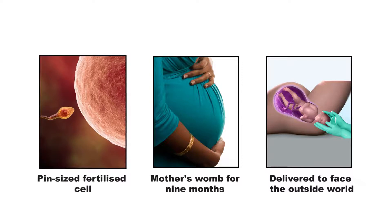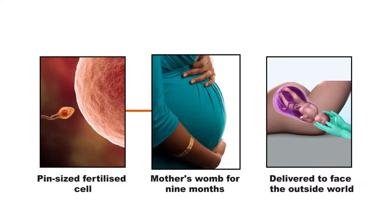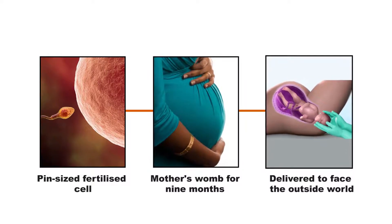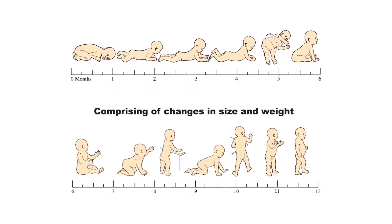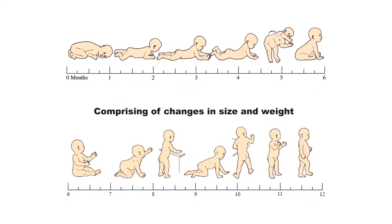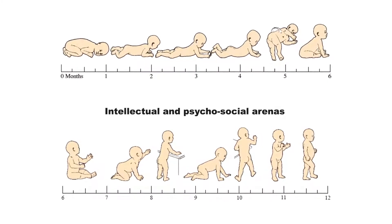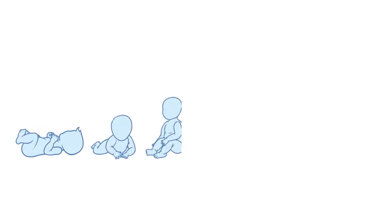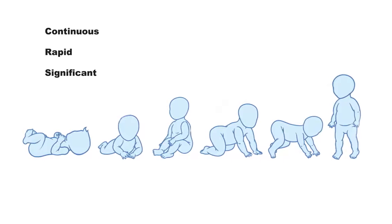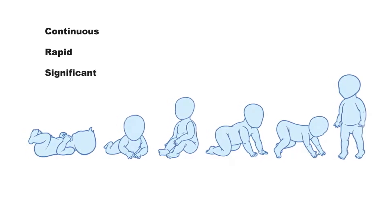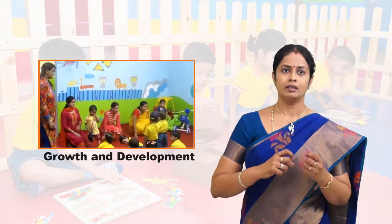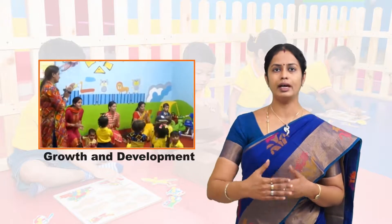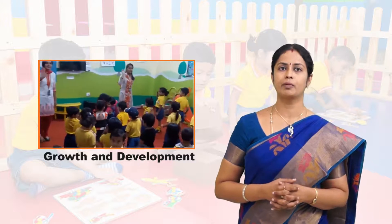Human life starts with a tiny fertilized cell which is nurtured in the mother's womb for nine months and delivered to face the outside world. After birth, the baby is under constant interaction with the environment, comprising changes in size and weight called growth, and qualitative changes in the intellectual and psychosocial arenas referred to as development. Though the process of growth and development is continuous, rapid, and significant, development is said to be particularly rapid and tricky in the first few years of life. Knowledge of the patterns and trends of growth and development needs to be well comprehended by a caretaker or teacher, who should be a facilitator — knowing what to expect, how to guide children, and how to enrich their environment for optimum development.